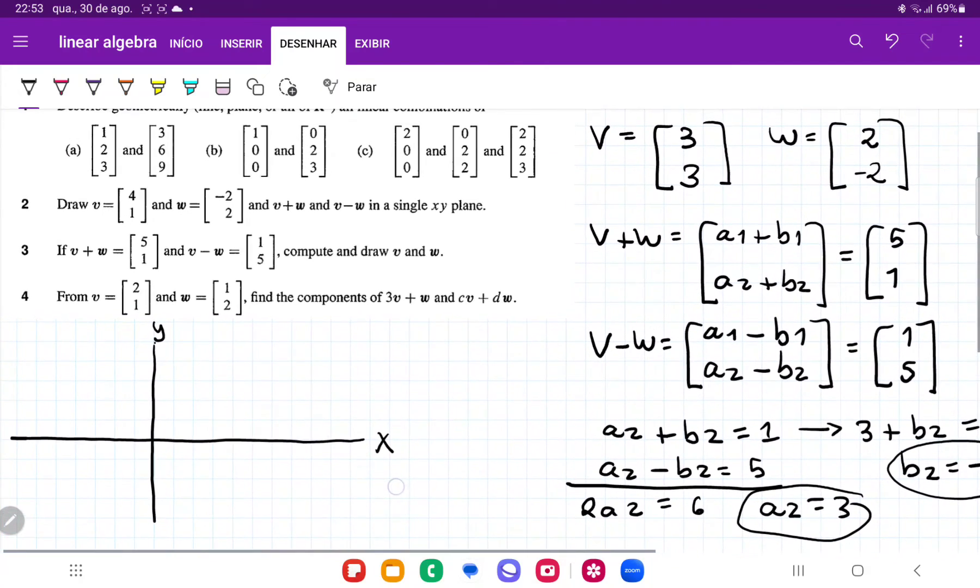So once we have these, now we just need to draw them. So v is going to be at 3, 3. So it's going to be 1, 2, 3, 1, 2, 3. So that gives us here v. And w is going to be 2, and then minus 2. So w is going to go down here. And so that is w. And that is it for problem number 3.